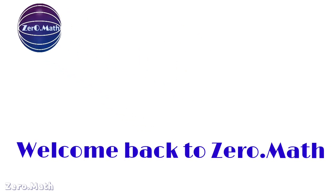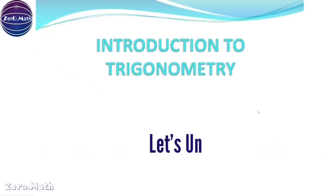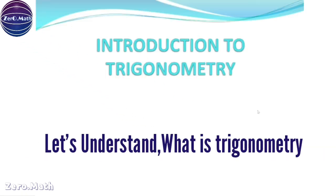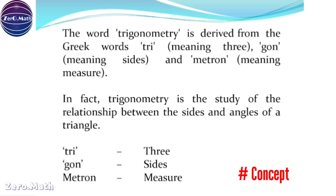Welcome to ZeroMath. Today we will understand what is trigonometry. The word trigonometry is derived from the Greek words: 'tri', which means three, 'gon', meaning sides, and 'metron', meaning measure. So we can say that trigonometry deals with the measurement of triangles.